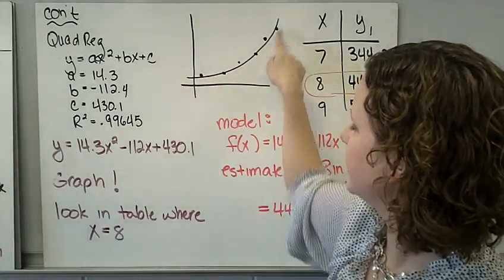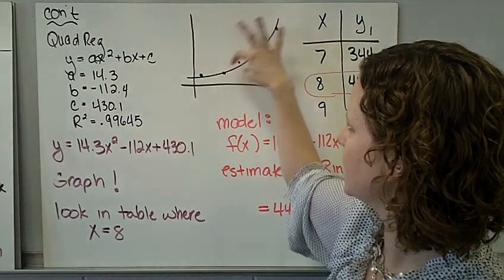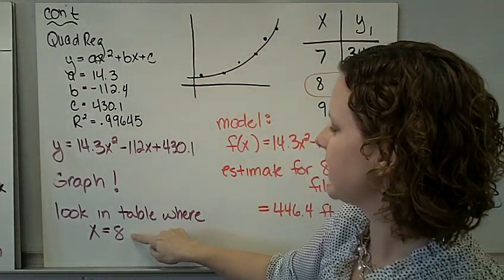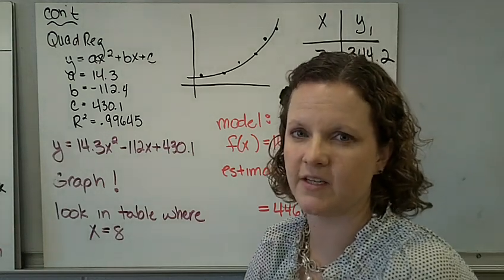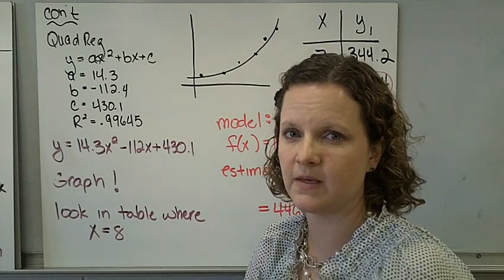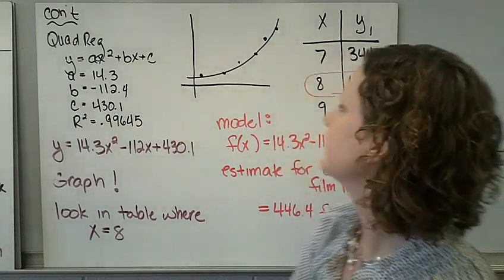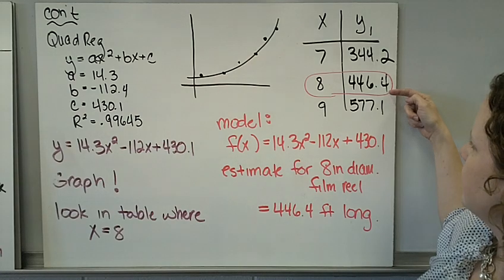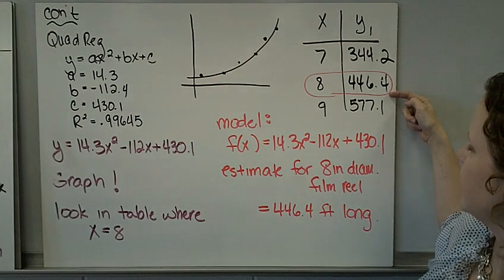Go ahead and plug that into Y1 and graph it. That is what my graph looked like, because I have the STAT plot turned on, so those points fill in. I want to look in the table where X equals 8, because that was the second part of the question. Predict or estimate what the reel length is going to be when the diameter is 8 inches.